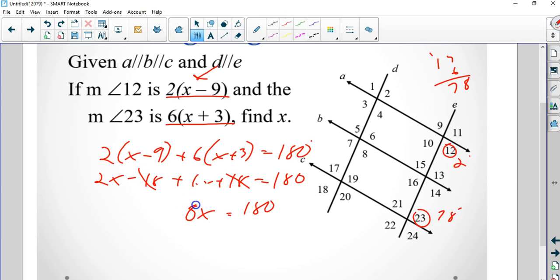So it's 8x equals 180 divided by 8. That makes much more sense. x is 22.5.